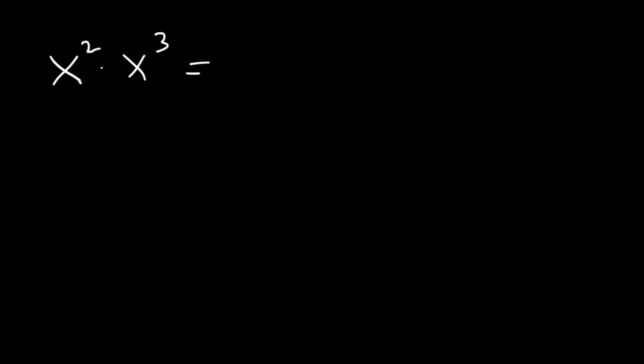In this video we're going to focus on properties of exponents. If we want to multiply x squared times x cubed, whenever you multiply common bases you need to add the exponents. 2 plus 3 is 5, so it's x to the fifth power. This is known as the product rule.